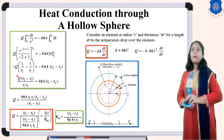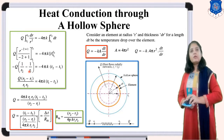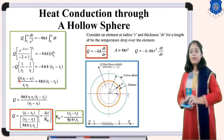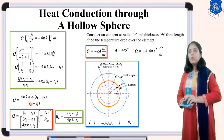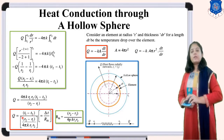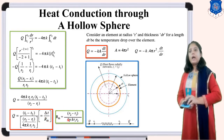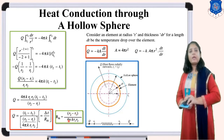So our final equation is Q equals 4πK·R1·R2·(T1 minus T2) divided by (R2 minus R1). This can also be written as Q equals (T1 minus T2) divided by the thermal resistance, where thermal resistance equals (R2 minus R1) divided by 4πK·R1·R2.